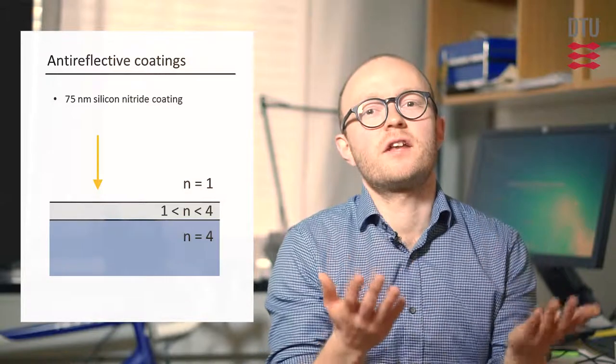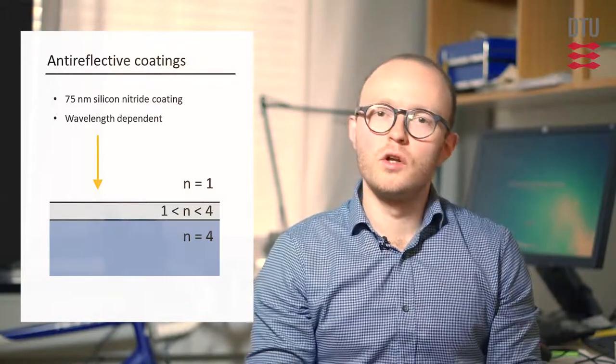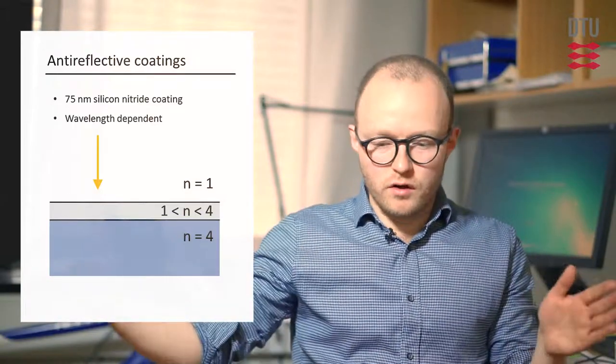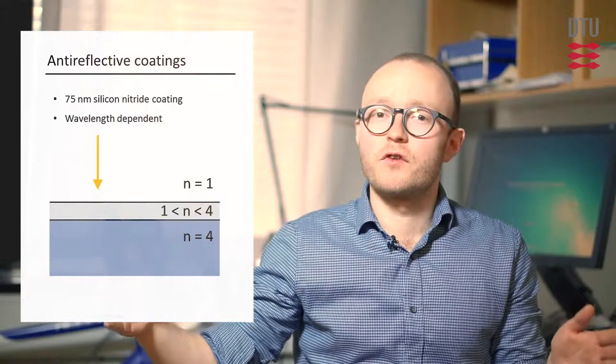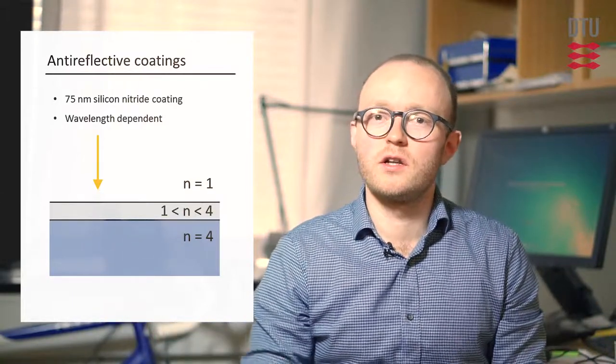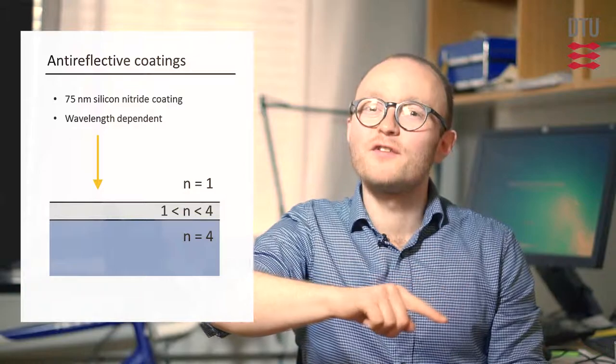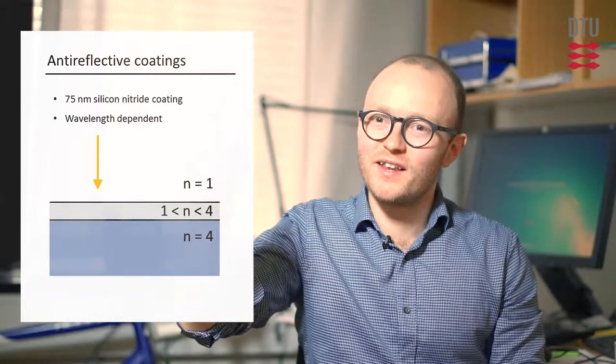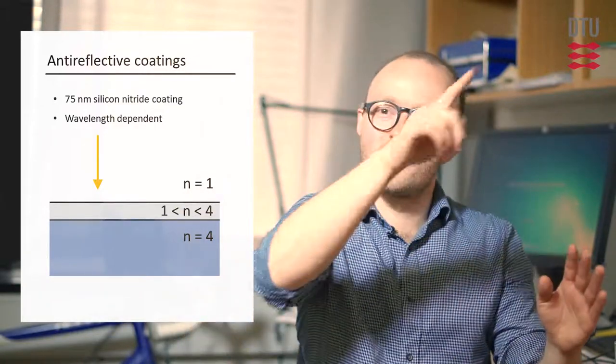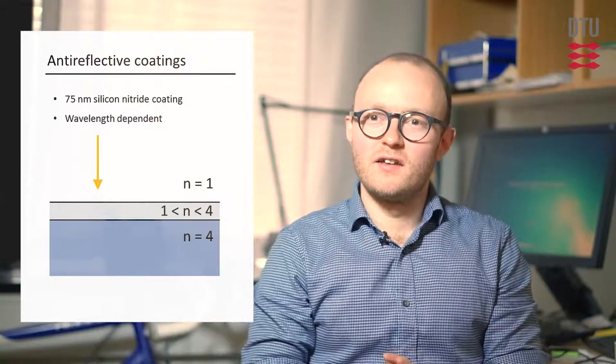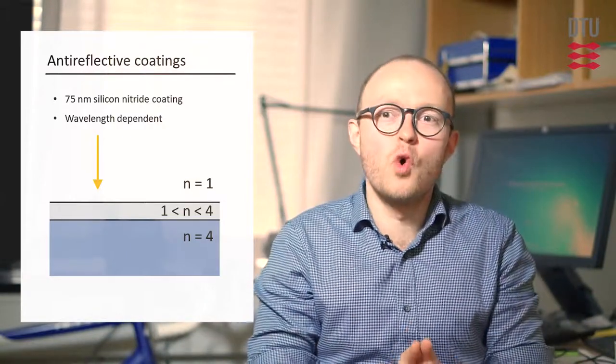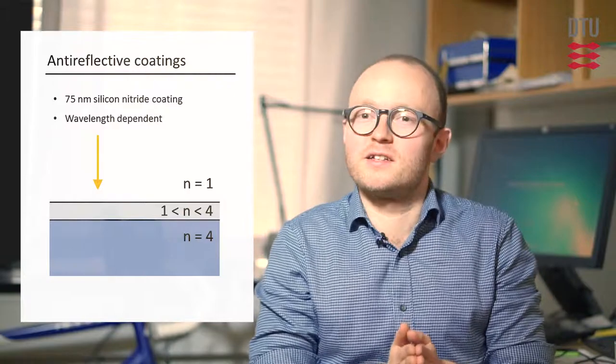This effect is wavelength dependent. And when you look at the reflection for different wavelengths from a standard industrial silicon solar cell, you'll see that it's very carefully minimized at a certain wavelength. And if you match that with the solar spectrum, you can see why. The industry has looked carefully into which wavelengths do we want to minimize.